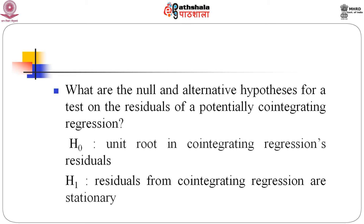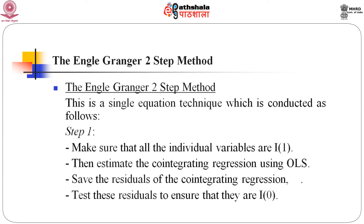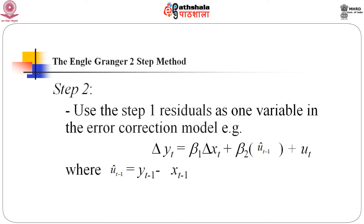The null and alternative hypotheses for the Engle-Granger test are: H0: unit root in the residuals of the co-integrating relation, and H1: residuals from the co-integrating relation are stationary. You can perform the Engle-Granger two-step method. In step one, make sure all individual variables are I(1), then estimate the co-integrating relation by OLS and save the residuals, then test these residuals to ensure they are I(0). In step two, use the residuals as one variable in the error correction model and perform OLS regression. This is the Engle-Granger two-step methodology using error correction mechanism.